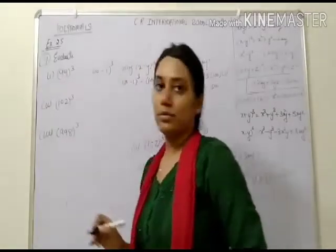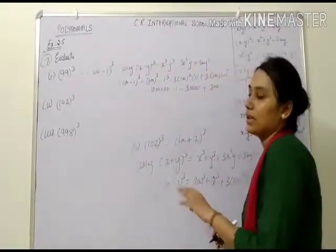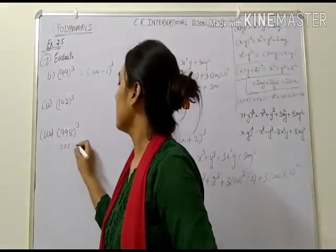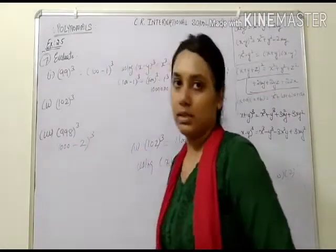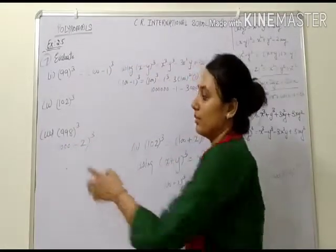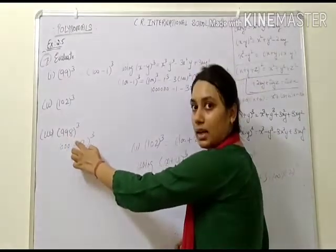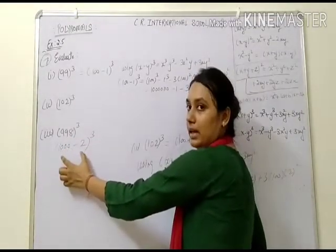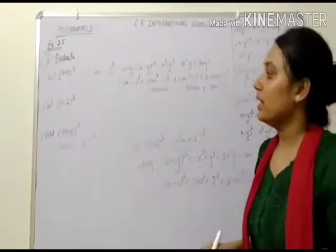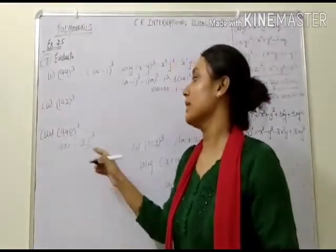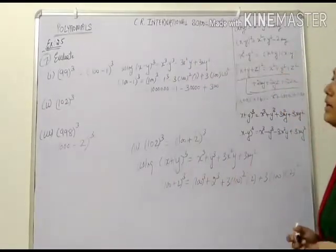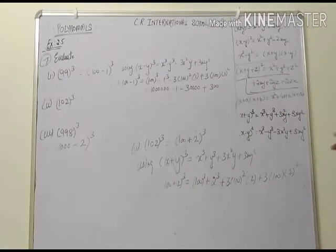Third part: 998 cube. Write 998 as 1000 minus 2, so 1000 minus 2 whole cube. Apply x minus y whole cube with x equal to 1000 and y equal to 2. Simplify accordingly. The key is always to rewrite the number in terms of 100, 10, or 1000 so that the identity can be applied cleanly. Remember which identity to apply in each case.